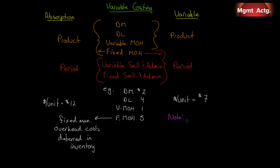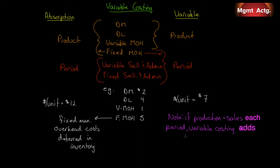Under variable costing, we only use the variable component in inventory, which is $7. Here's the key point: if production equals sales each period, variable costing adds nothing new. Even in a case where inventory is minimal — say, production doesn't equal sales but inventory is just minimal — variable costing also adds nothing new. For example, think of just-in-time inventory systems; at the end of this chapter we'll give an example of lean production where it adds nothing new as well.